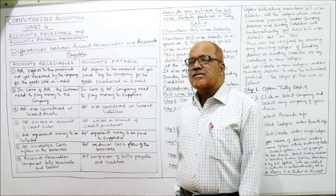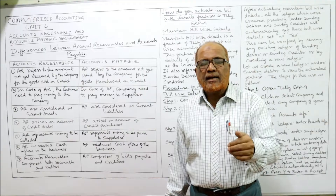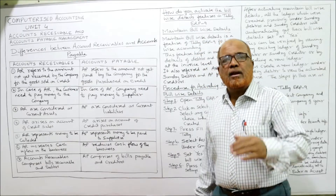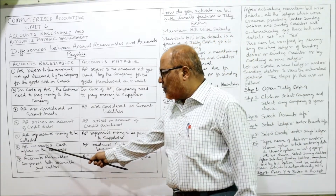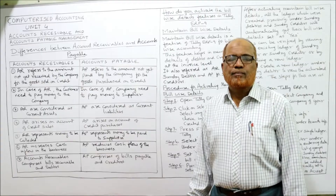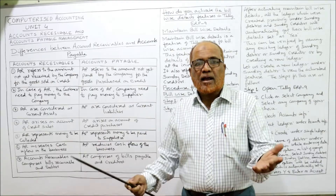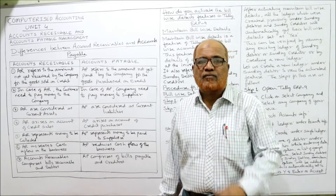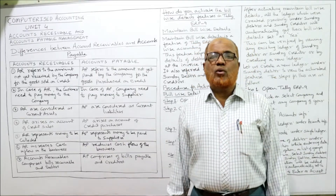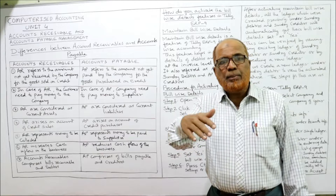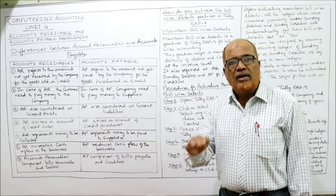Accounts receivable represents money to be collected, whereas accounts payable represents money to be paid. Accounts receivable increases the cash flow of the business — it is a current asset convertible to cash within a short period. Whereas accounts payable decreases the cash flow, because the company has to pay the amount out.